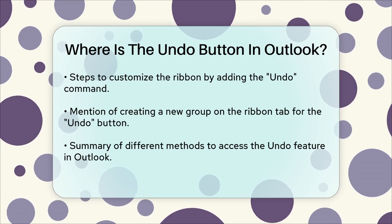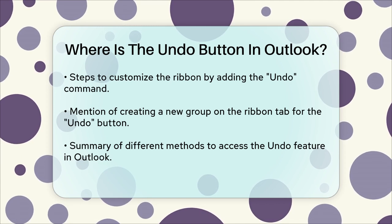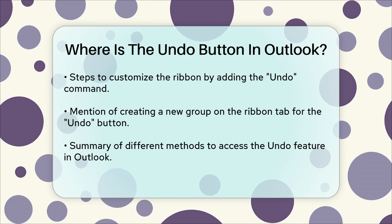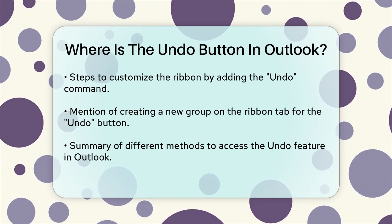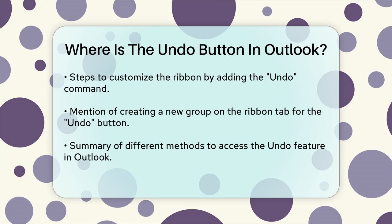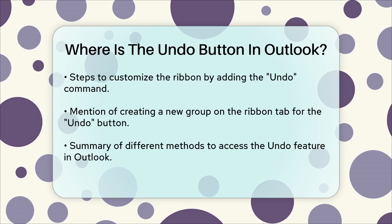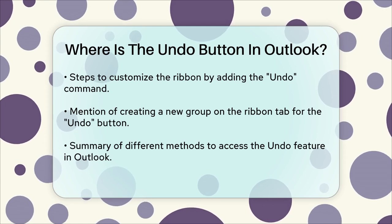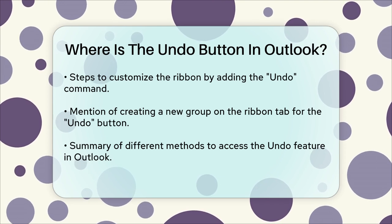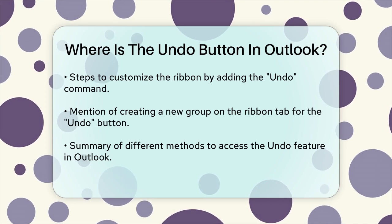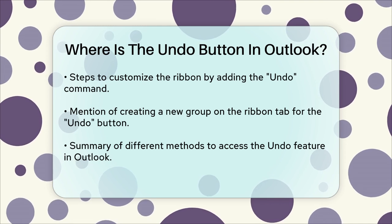In summary, the undo feature in Outlook can be accessed through different methods depending on what you need. For undoing sent emails, use the undo send feature in the settings. For general actions, use the Ctrl+Z shortcut or add the undo button to your ribbon. These tools can save you a lot of hassle and give you more control over your email actions.